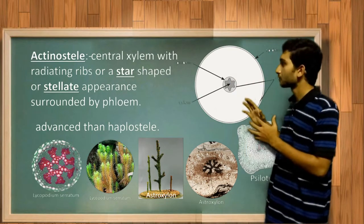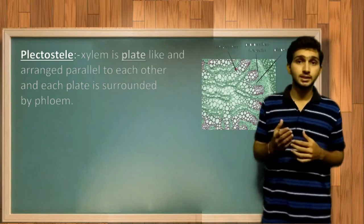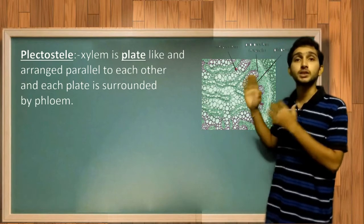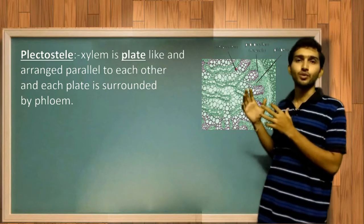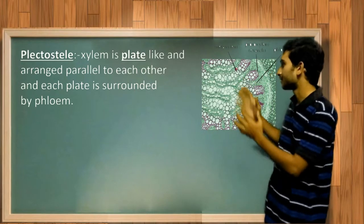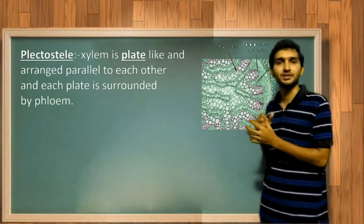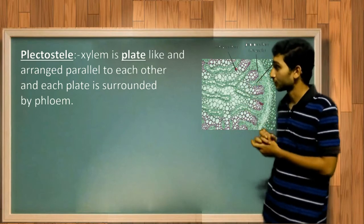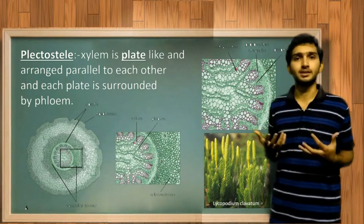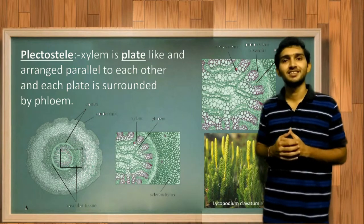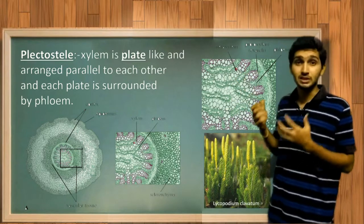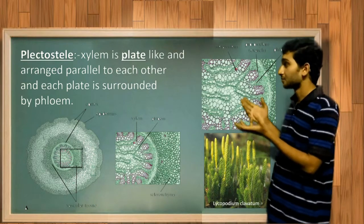In the plectostele, the xylem is plate-like and the plates are arranged parallel to each other, and each xylem plate is surrounded by phloem, forming a very interesting shape. We can find this type of stele in Lycopodium clavatum. These are considered more advanced than actinostele. In the sequential manner, we can observe progression from haplostele to actinostele and then to plectostele.